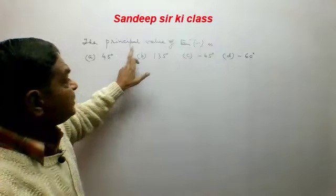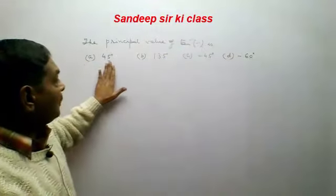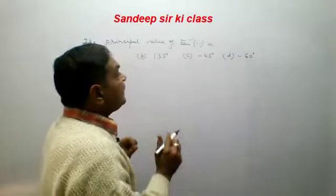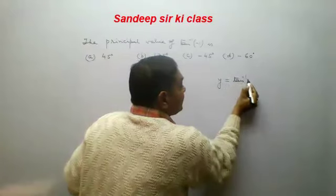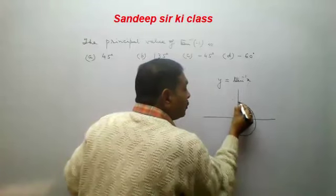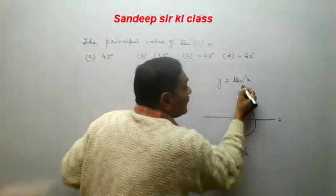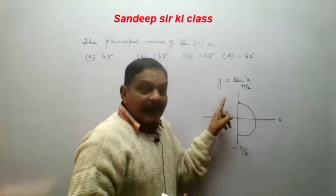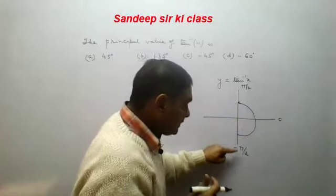The question asks for the principal value of tan⁻¹(-1). The options are 45°, 135°, -45°, and -60°. We know that if y = tan⁻¹(x), then its principal value lies between -π/2 and π/2. The endpoints are not included because tan(π/2) is infinity.